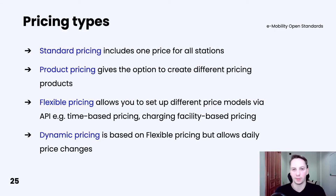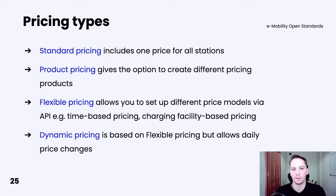In order to start integration between CPO and EMP, the CPO must provide pricing for an authorization service. Then the EMP may subscribe to this service, and therefore its customers can use the charging infrastructure of the given CPO. There are four different types of pricings. The first and most common is standard pricing — one simple price for all stations. It can be, for example, per hour, per minute, or per kilowatt-hour.